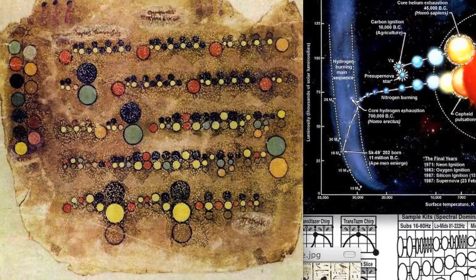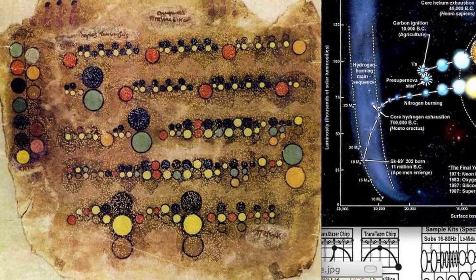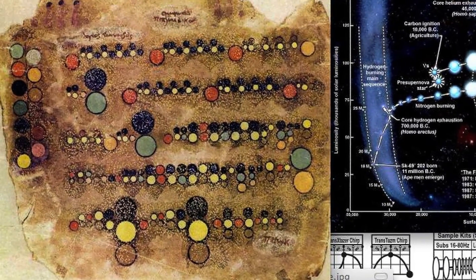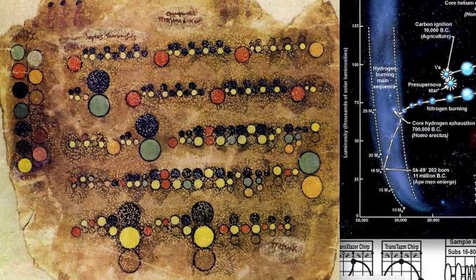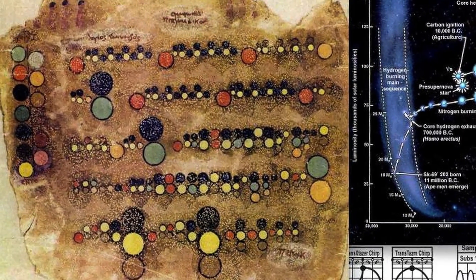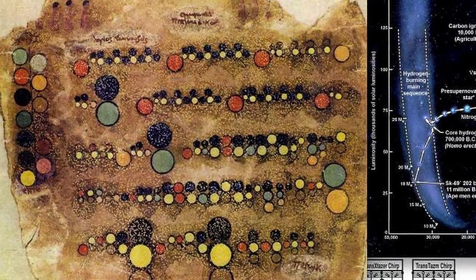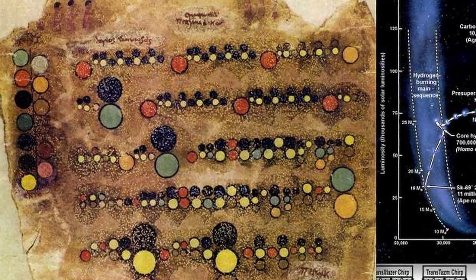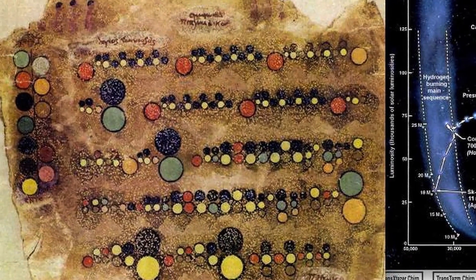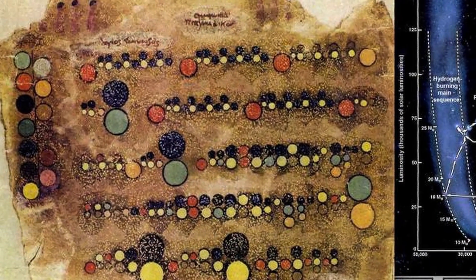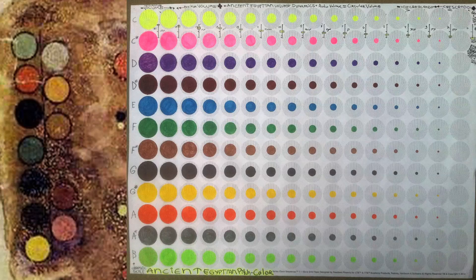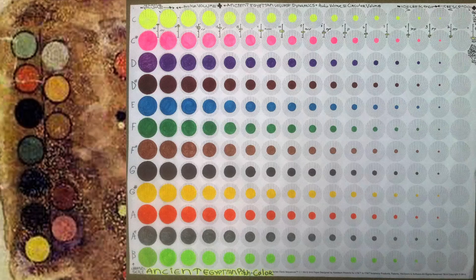Whether you live in a metropolis or a small town, there may be some hidden rare jewel in your local library, museum, or university that could change the world's understanding of the past. I've decoded the colors of each note below using the key to the left of the Egyptian notation.